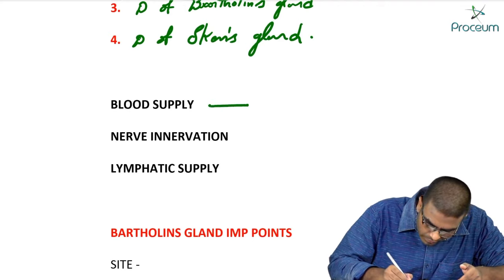Because of lactic acid production, the vaginal pH is acidic — almost around 4.5. This is a very important MCQ. The vaginal pH is maximally acidic during pregnancy.